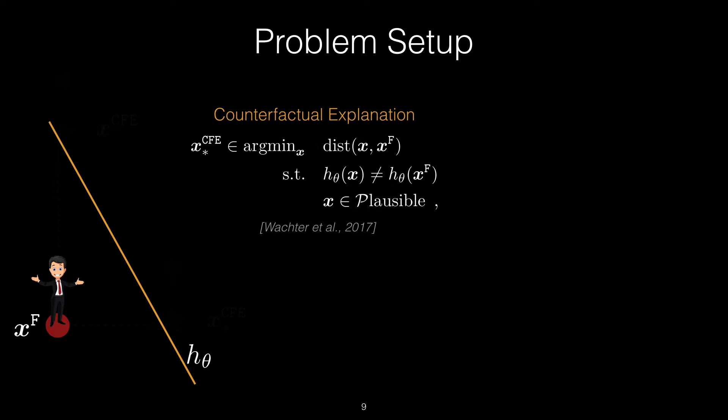The original counterfactual explanation problem was formulated by Wachter et al. as this optimization problem here, to find the most similar individual or feature vector to the factual individual that is seeking recourse. This feature vector would obtain the desired outcome on the other side of the decision boundary. This is visually depicted using the two x^CFEs or hypothetical Edwards in the figure.